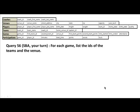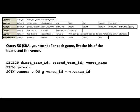For each game, list the IDs of the teams and the venue name. So which tables are required? We need the venue name, so the venue table is required, and we need the games table because we're talking about each game. So clearly this query requires us to join those two. Pause the video, try it out, get your answer, and then come back. We want first team ID, second team ID — those are the field names in the table.